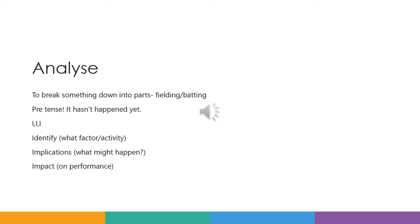And now we're moving on to analyse — your APAS questions. Really focus in on this, but it's pretty easy. It's very similar to explain answers, but you've just got to make sure that you put the right acronyms next to your answers. To analyse is to break something down into parts. We're breaking it down into fielding and batting and also the effects of anxiety — we freeze and we also get muscle tension.